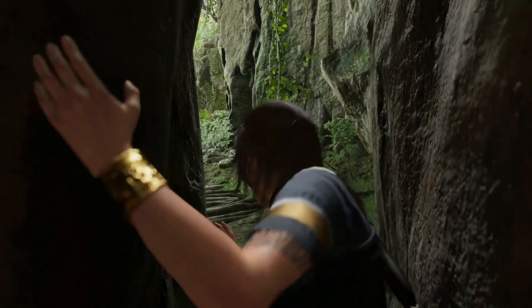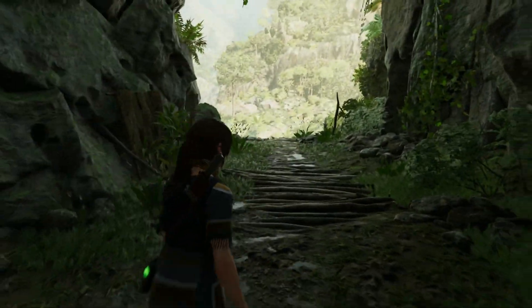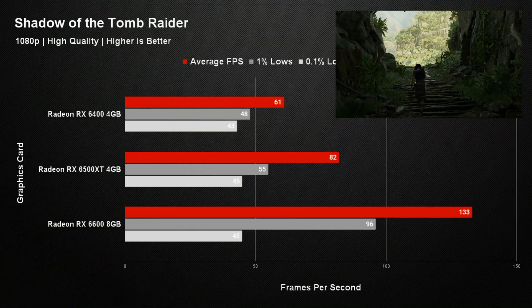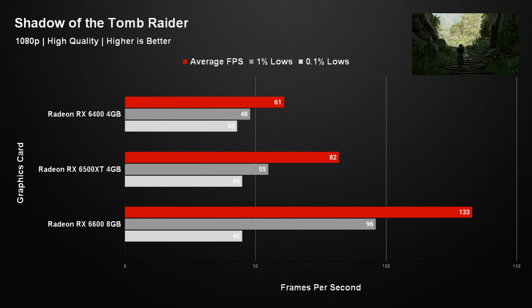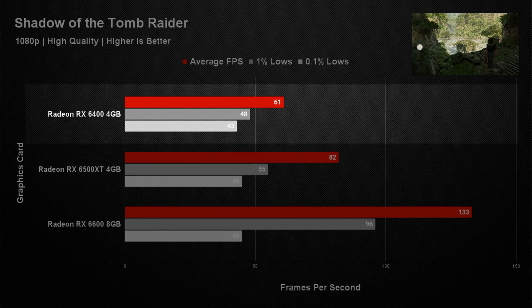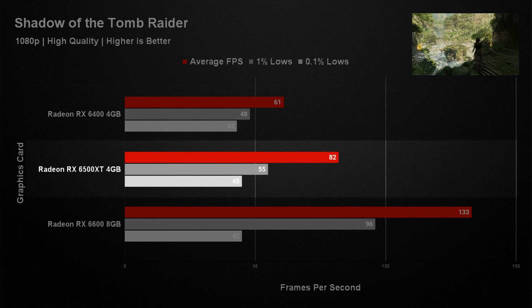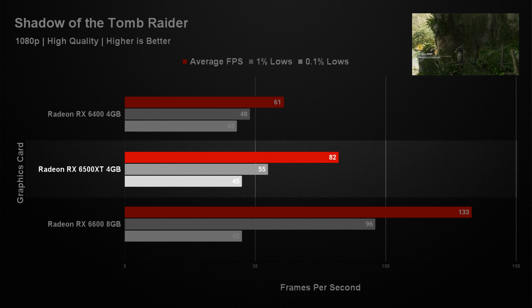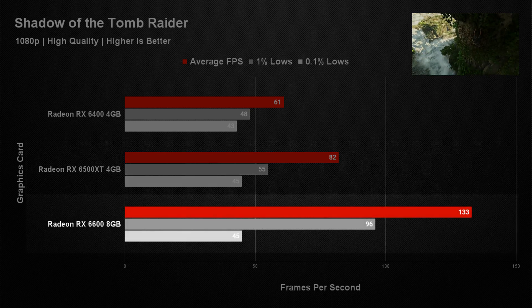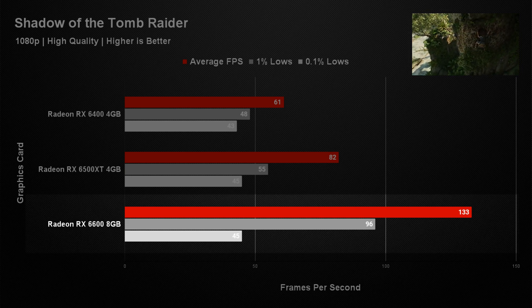Shadow of the Tomb Raider was the last game in our test suite and is a title that typically runs exceptionally well on modern AMD graphics cards. All three cards hit the 60 fps target, with the RX 6400 averaging 61 fps, the RX 6500 XT averaging 82 fps, and the RX 6600 pulling a huge lead over both with an average of 133 fps.